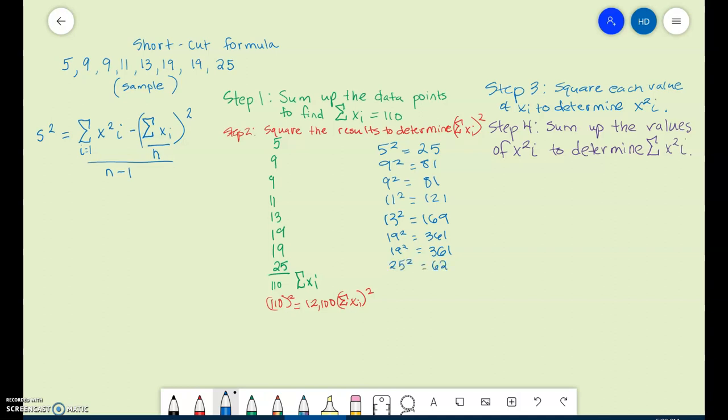So we have determined X² for each value. And then step 4 says to sum up the values of Xi². So sum these up and that's going to give us the sum of X². So when you sum those up, I believe I got 1,824.